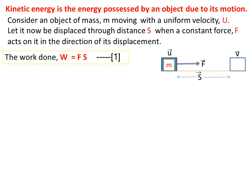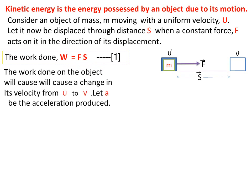The work done W equals force into displacement. Work W, force is f, and displacement is s, so W is equal to fs. This is our equation number one.